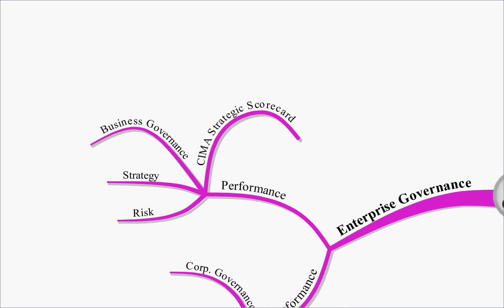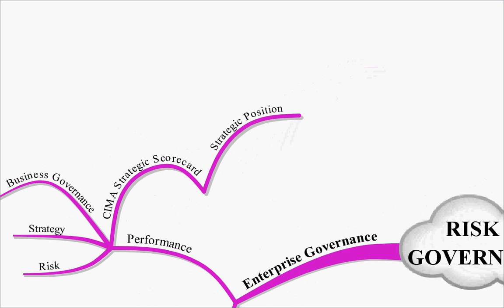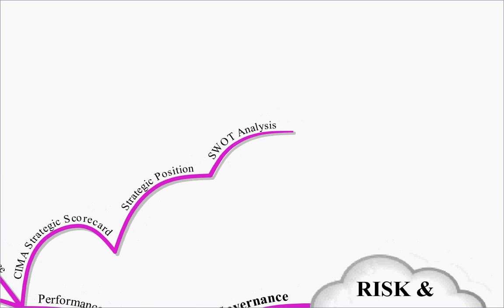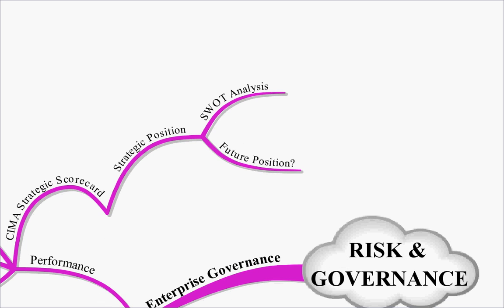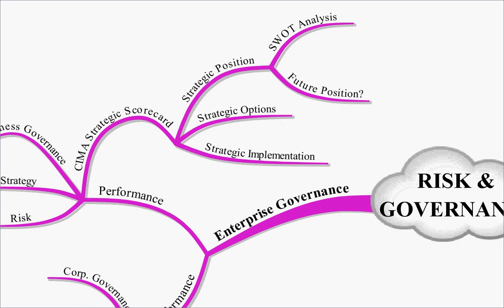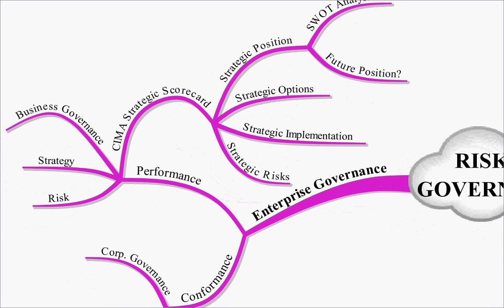We looked at the CIMA Strategic Scorecard. This covered our strategic position, which we might look at via some sort of SWOT analysis. We may try and judge our future position. We then will look at our strategic options - what are our options for moving forward? And how are we going to implement those strategic options? Strategic implementation. Finally, strategic risks - what risks are there that this strategy might not work? So that's Enterprise Governance.